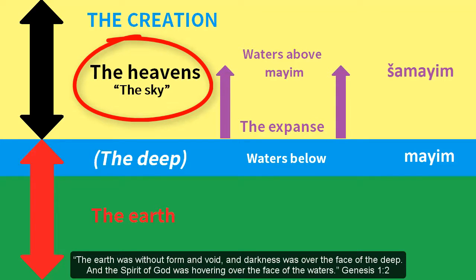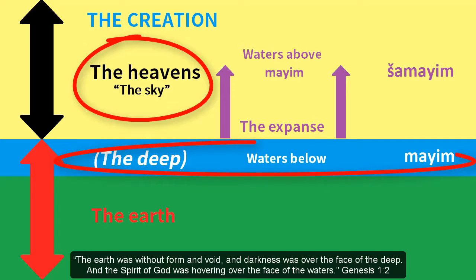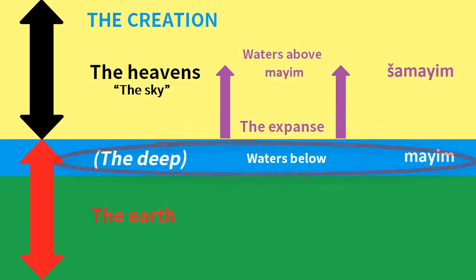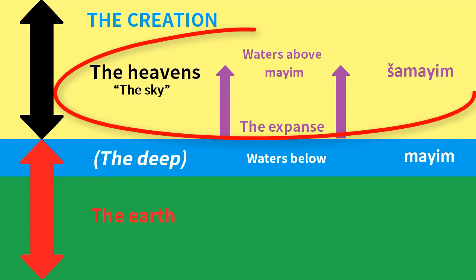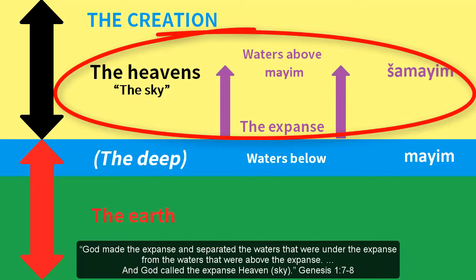The earth was without form and void, and darkness was over the face of the deep. And the Spirit of God was hovering over the face of the waters. The word 'expanse,' formerly translated as 'firmament,' is defined by Genesis as the sky, which is also called the heavens. God made the expanse, and separated the waters that were under the expanse from the waters that were above the expanse.